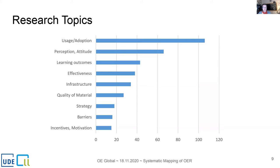Several studies — especially from the US region — investigate the use of open textbooks and their comparative cost advantages compared to classical educational materials. This research focus is understandable given that, in contrast to countries like Germany where prices for educational materials are moderate or low, many countries use OER to reduce the costs of education. In the USA especially, such studies can be found with a focus on the university context.